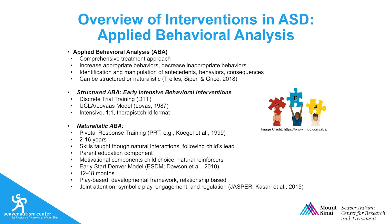Naturalistic forms of ABA are also based on behavioral principles. In pivotal response training, or PRT, skills are taught in natural interactions and routines by following the child's lead and using what's motivating to each child. Similarly, in the Early Start Denver Model, play is used to teach skills to very young children, with a large focus on the relationship and development. Jasper targets core social and interactive skills, again using a naturalistic approach.